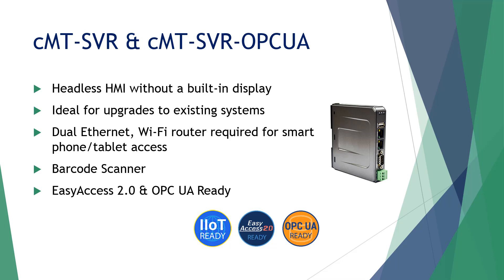Activate your CMTSVR with an EasyAccess 2.0 activation card to remotely connect to it from anywhere in the world. An OPC UA license can be purchased for existing CMTSVR installations to add OPC UA features, or purchase the pre-licensed CMTSVR OPC UA for new OPC UA installations.